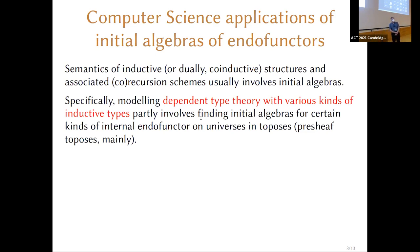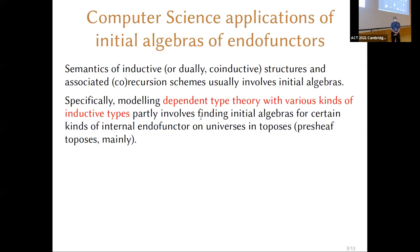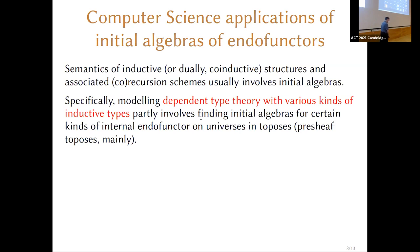More specifically, people have been interested in giving categorical semantics of various kinds of dependent type theory — Martin-Löf type theory on various kinds of steroids — in particular dependent type theory with various kinds of inductive types. Giving a categorical semantics has involved looking in various kinds of toposes, very often presheaf toposes, constructing models of the type theory, and looking for conditions on internal functors on universes in those toposes that ensure you can get initial algebras.